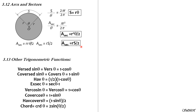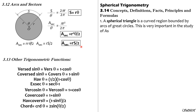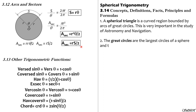Now for spherical trigonometry: a spherical triangle is a curved region bounded by arcs of great circles. This topic is important in the study of astronomy and navigation. Great circles are the largest circles of a sphere and pass through the center of the sphere — the projection of the sphere itself is the great circle. If the radius of the sphere is R, then the radius of the great circles is also R.